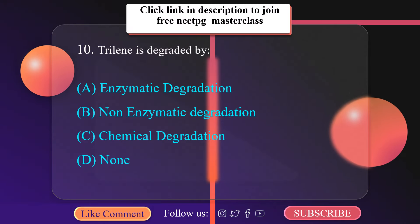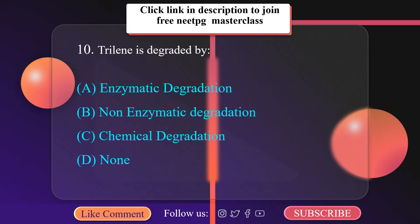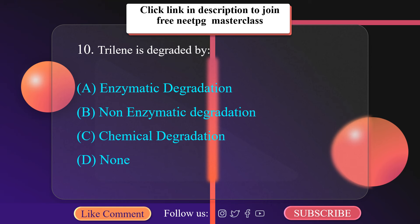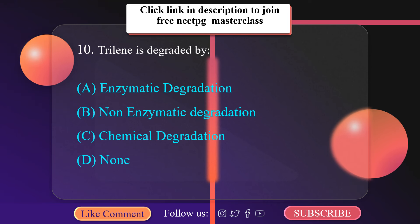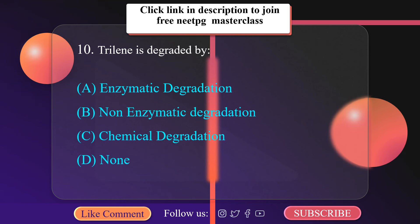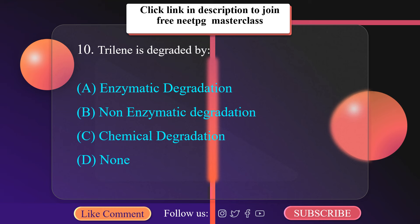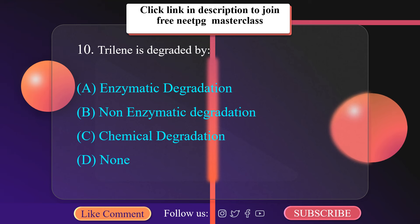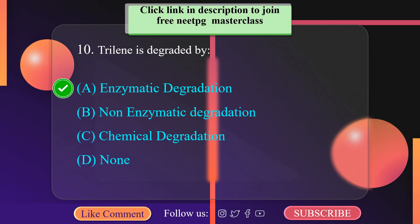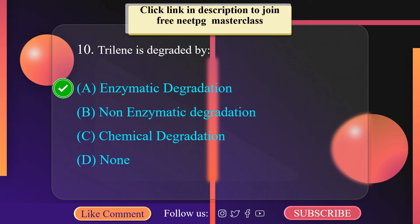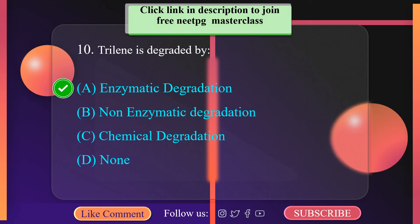Triline is degraded by: A. Enzymatic degradation, B. Non-enzymatic degradation, C. Chemical degradation, D. None. The correct option is A — Enzymatic degradation. Wishing you all the best.